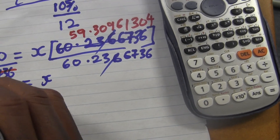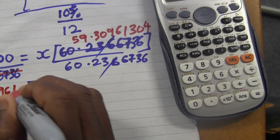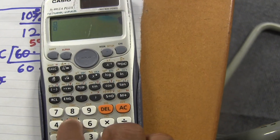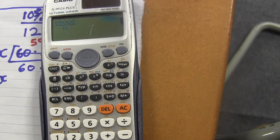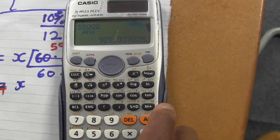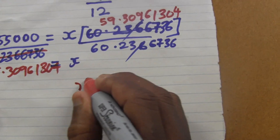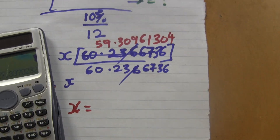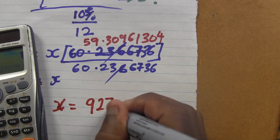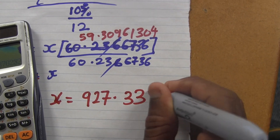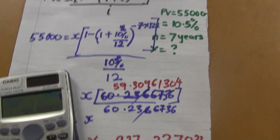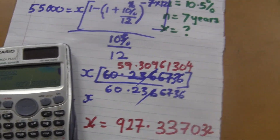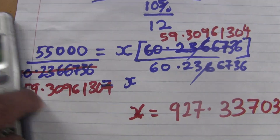So the denominator bracket gives 59.3096 (approximately 59.30961304). Now I take 55,000 divided by that answer. So X equals 55,000 divided by 59.3096, which gives approximately 927.337. Our monthly payment X is approximately $927.34.